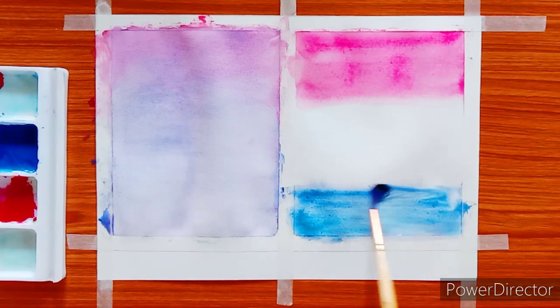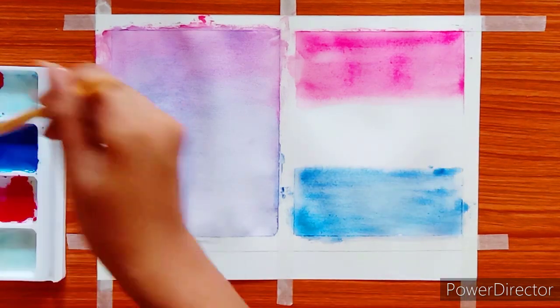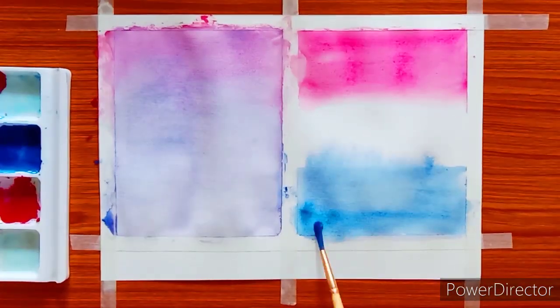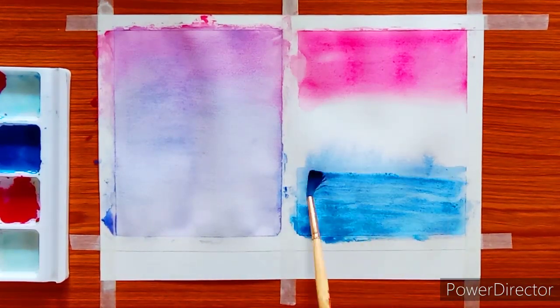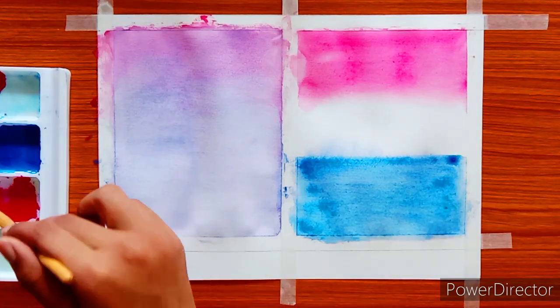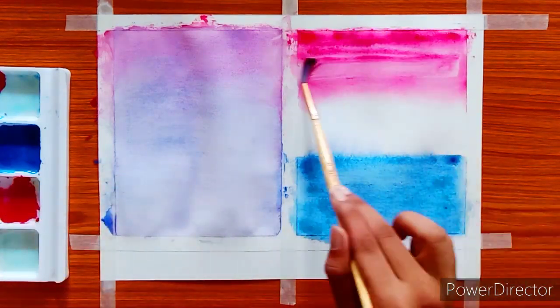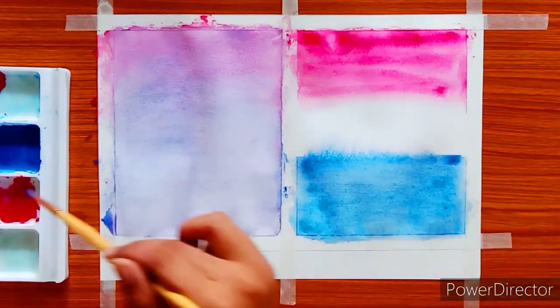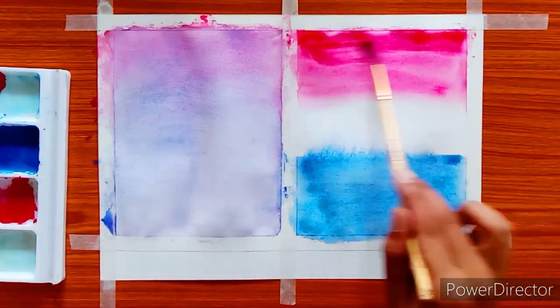So you usually start off with red on the top and blue in the bottom. I usually use the mixture of cobalt blue and Prussian blue in the bottom, and crimson red on the top. I think those colors look really good together, so I usually like this gradient a lot.